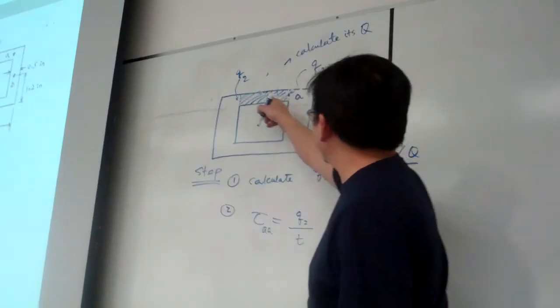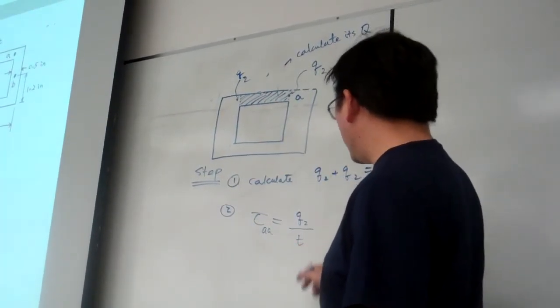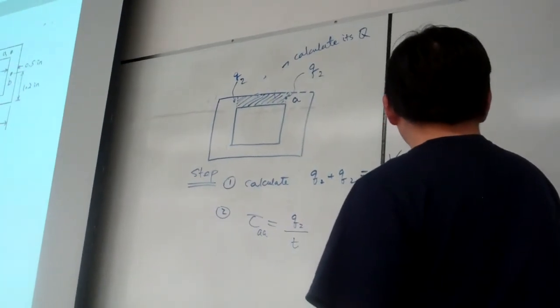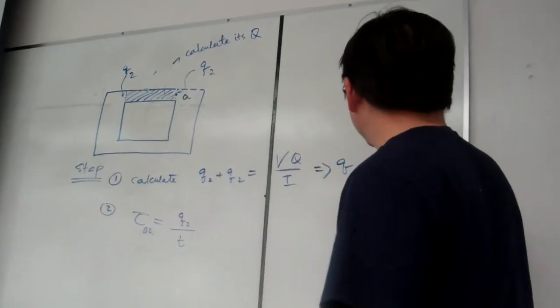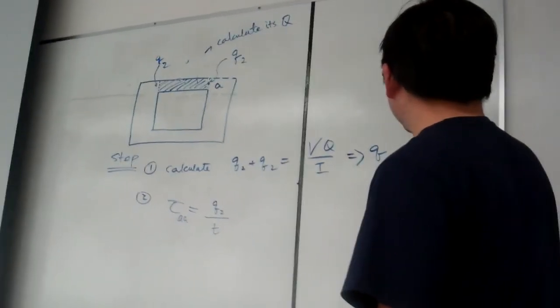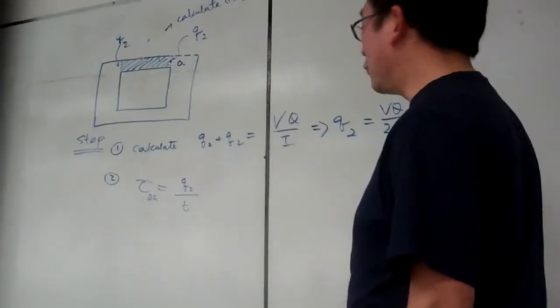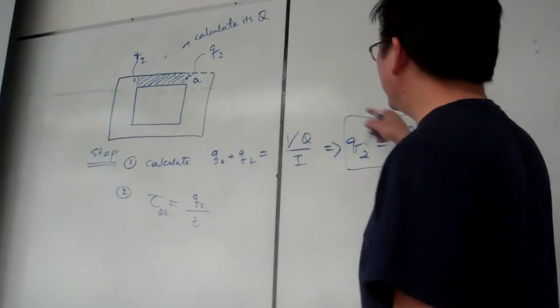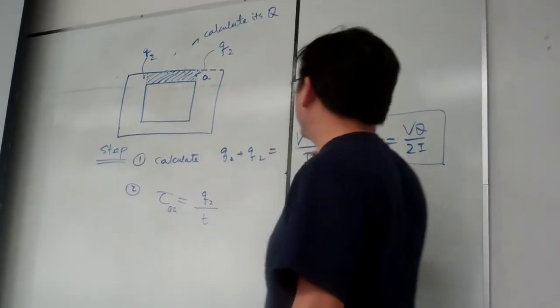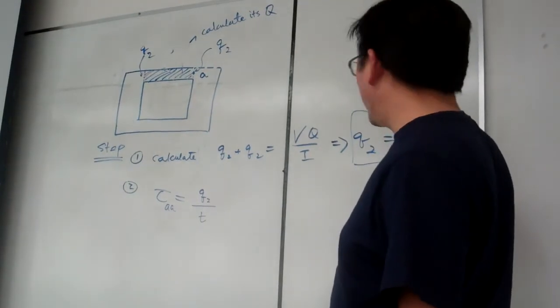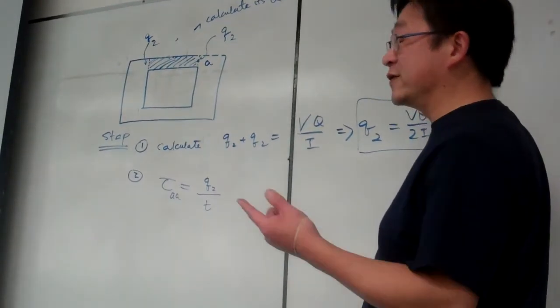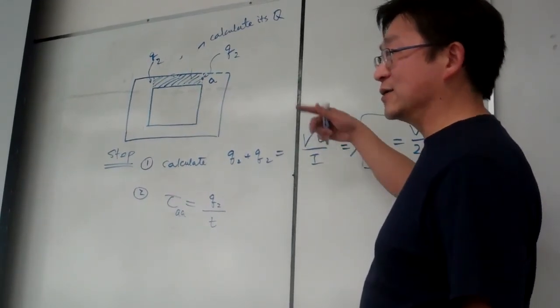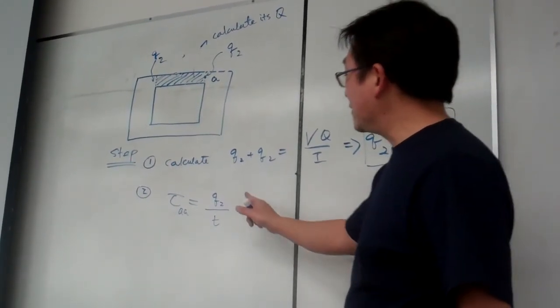So, VQ over I. The same thing, the Q is corresponding to this one. And now, we have this one. So, basically, Q2 will be equal to, for this correspondence, will be VQ over 2I. Once you have this one, you can double check this one because, for this case, the Q has been doubled from the previous one. So, this will be double from the previous one, divided by 2. So, basically, this calculation is the same as the previous one. Got it?